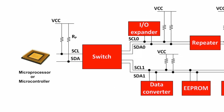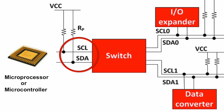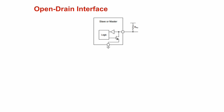The two wires are clock and data, abbreviated as SCL and SDA respectively. The I2C bus is an open drain interface standard that requires a pull-up resistor for pulling up the signal to a high state. The pull-up resistors are needed so that they can pull the line high when it is not driven low by an open drain interface.